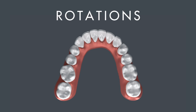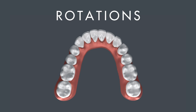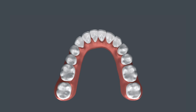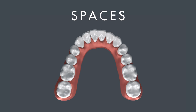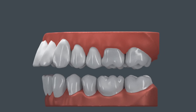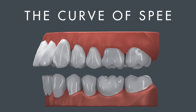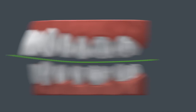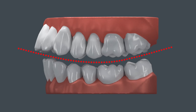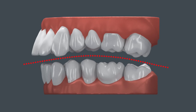Andrews' fourth key is rotations. The teeth should be free of undesirable rotations, as a rotated molar won't occlude properly and may occupy too much space in the arch. Andrews' fifth key is spaces — the contacts should be tight unless there's a genuine tooth size discrepancy. The final key is the curve of Spee, which describes the curvature of the occlusal plane. The curve of Spee should be flat or slightly concave; a deeply concave curve won't allow enough space for the upper teeth, and a convex curve will spread them out too far.